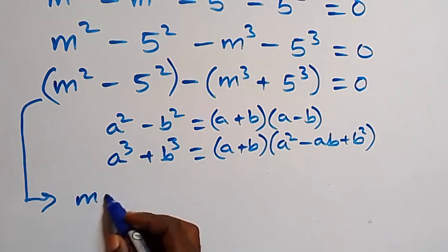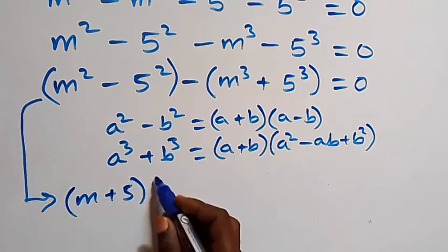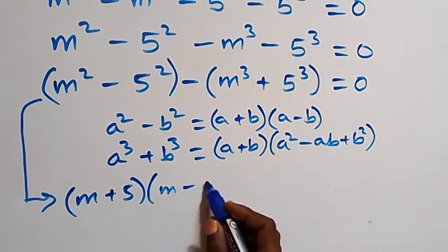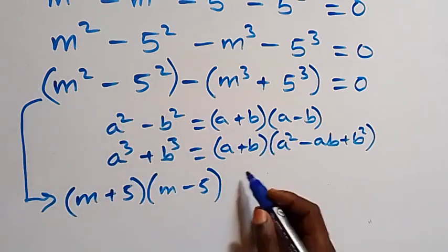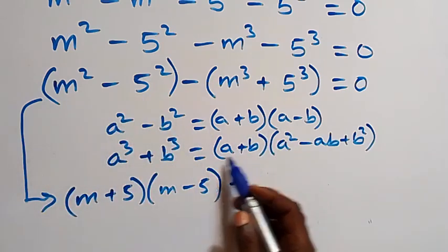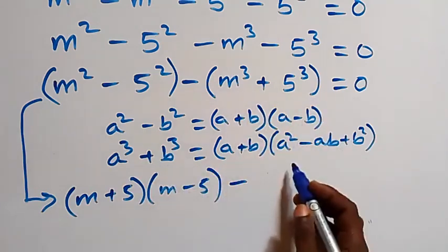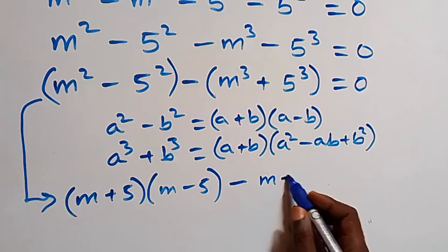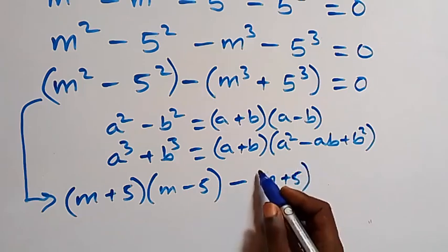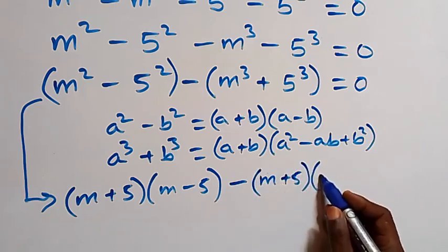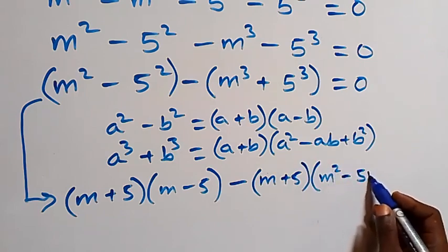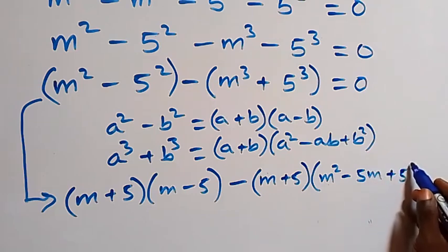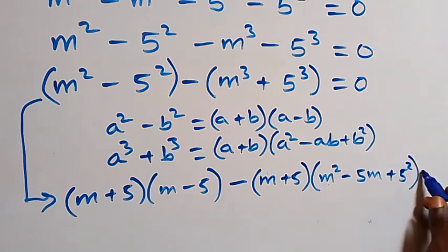Applying these identities, the equation becomes (m plus 5)(m minus 5) minus (m plus 5)(m squared minus 5m plus 25), equals zero.